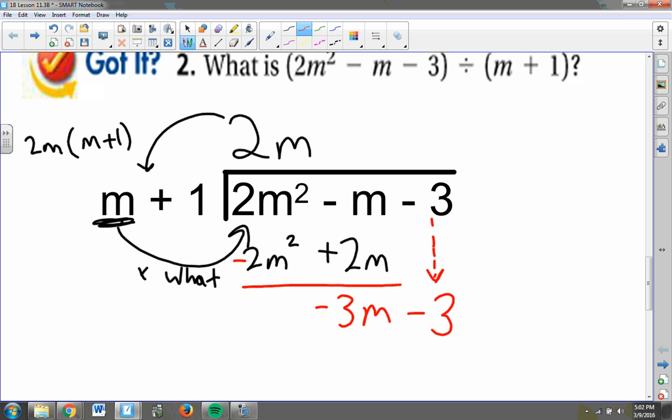And now I'm going to ask, m times what gets me to negative 3m? And the answer is negative 3. And then if I multiply the negative 3 times m plus 1, that's what I'm going to put underneath here. Negative 3 times m gives me the negative 3m that I wanted. Negative 3 times 1 gives me a minus 3.